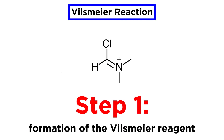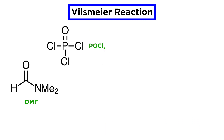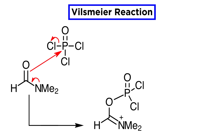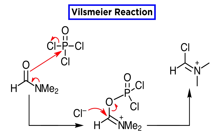So let's check out the mechanism. In the first part, the Vilsmeier reagent is formed. As we can see, nitrogen pushes its lone pair onto carbon, then oxygen attacks phosphorus, and one of these chlorines will leave. Because of this we now have chloride in solution, which will attack this carbon, and this carbon-oxygen bond will cleave. This is the Vilsmeier reagent.